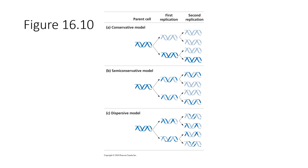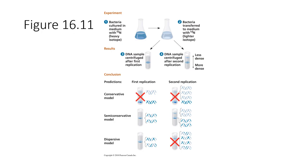The third model — the dispersive model — proposed that by some mechanism regions of the genome would be entirely parental and other regions entirely newly synthesized, and in the other daughter cell it would be the opposite, creating a sort of dispersive mixture of parental and newly synthesized DNA.